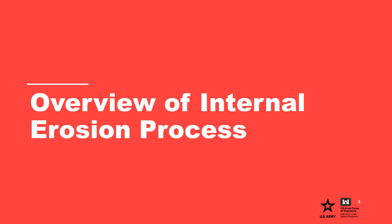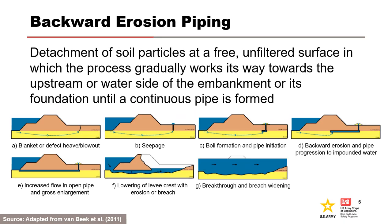Backward erosion piping is an internal erosion potential failure mode for levees and embankment dams that has historically caused numerous failures. It is defined as detachment of soil particles at a free, unfiltered surface, in which the process gradually works its way towards the upstream or water side of the embankment or its foundation until a continuous pipe is formed. To occur, there must be a flow path or source of water, an unprotected exit, erodible material within the flow path, and the material being piped or material directly above it must be able to form and support a roof or pipe.